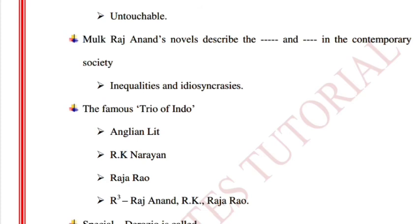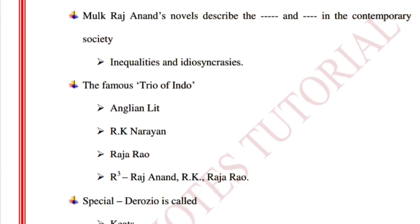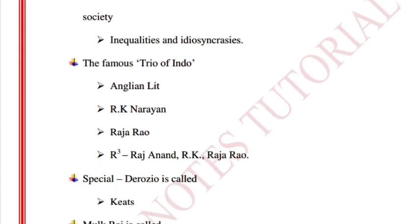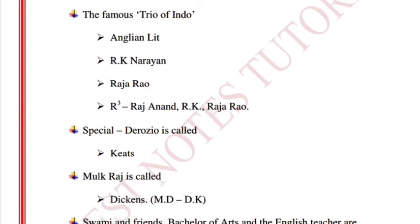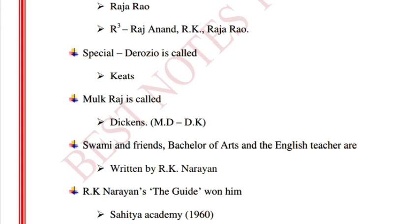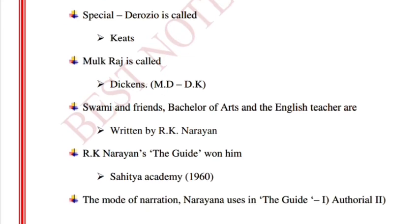The famous Indo trio: Mulk Raj Anand, R.K. Narayan, and Raja Rao — you can remember 'R-cube.' R.K. Narayan is called the Keats of Indian literature, and Mulk Raj Anand is called the Dickens.